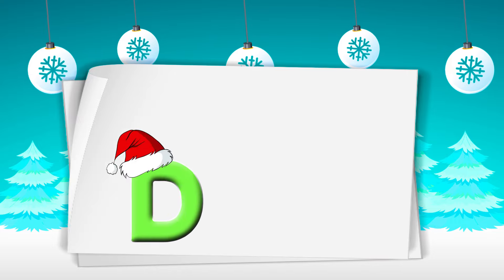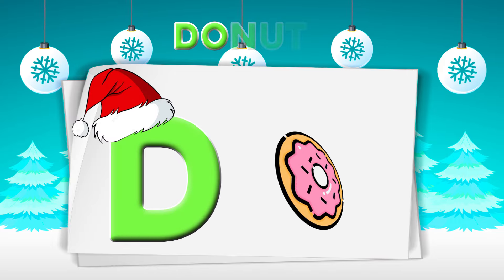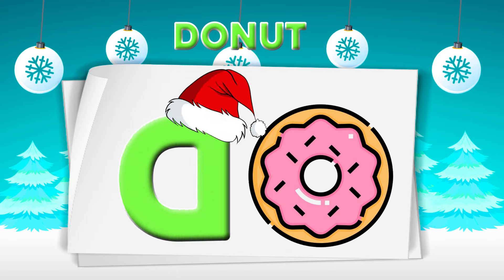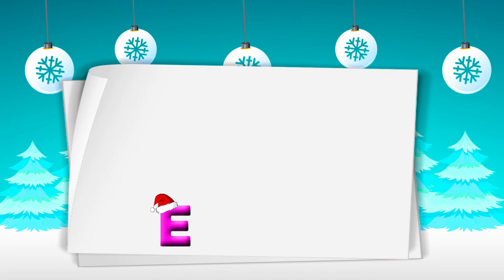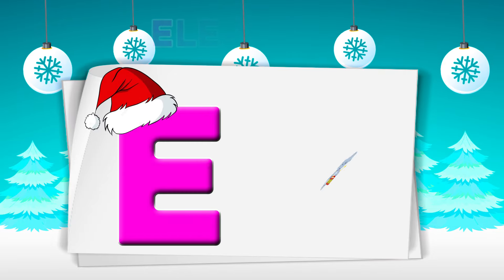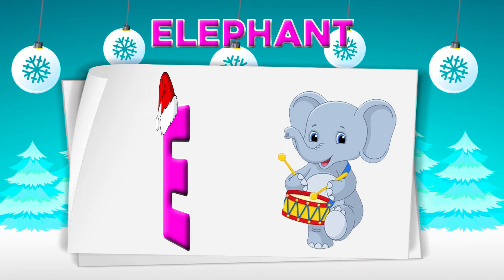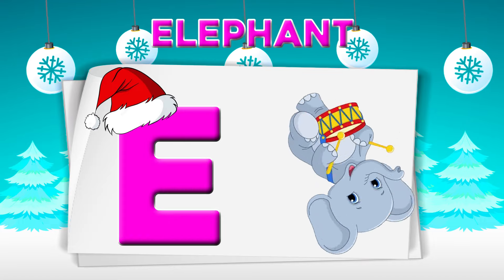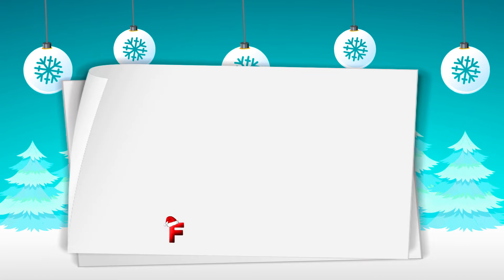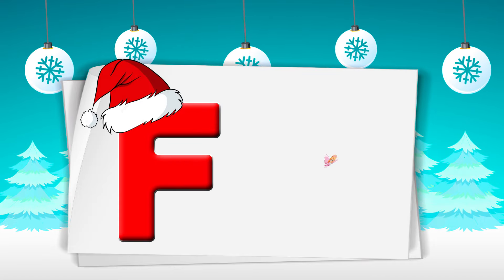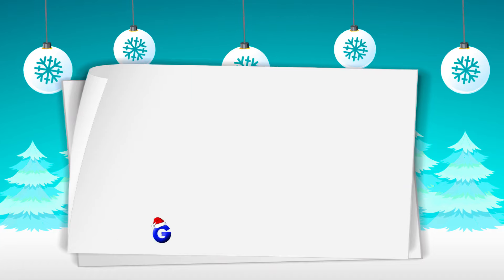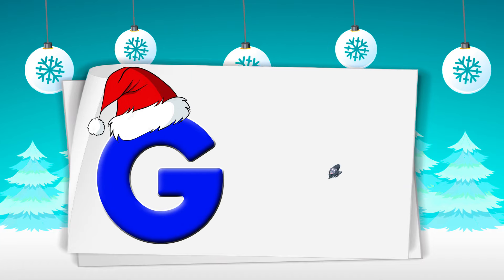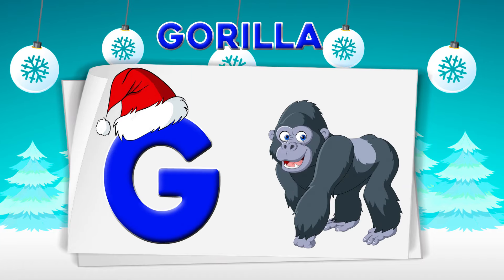Coconut. D is for Donut. Donut. E is for Elephant. Elephant. F is for Fairy.